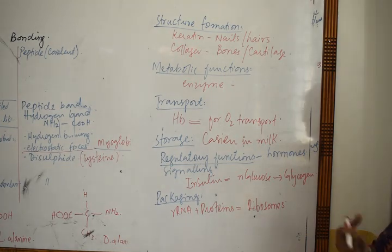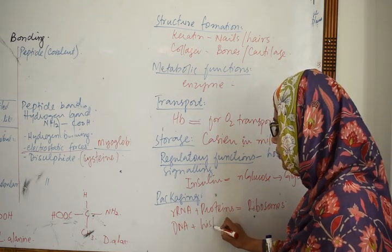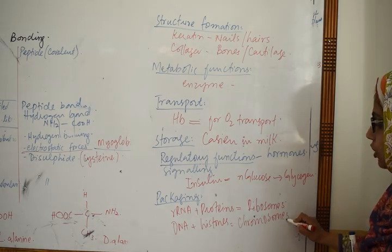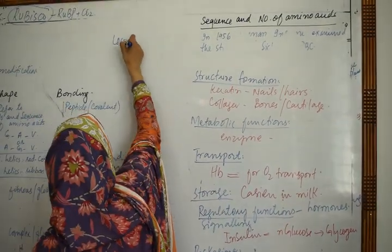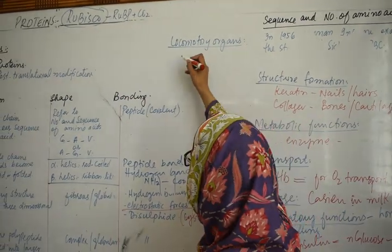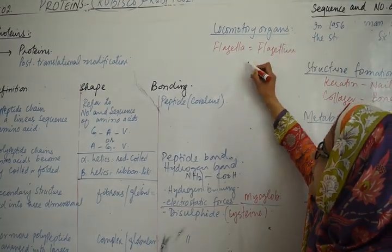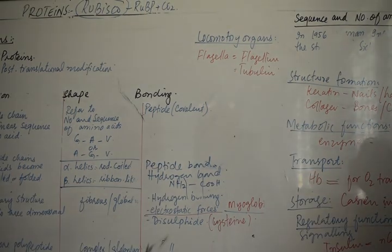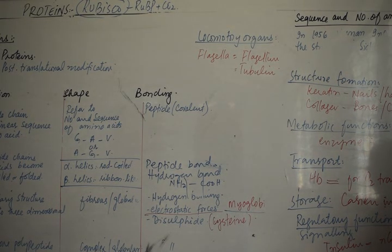Ribonucleoproteins — when RNA combines with ribosomes, or when DNA combines with histone proteins to form chromosomes — these are packaging roles that DNA and RNA-associated proteins help with. For locomotory organs, we have two types: flagella and cilia. Flagella in prokaryotes use flagellin protein, and in eukaryotes tubulin protein. Cilia also involve specific types of proteins.